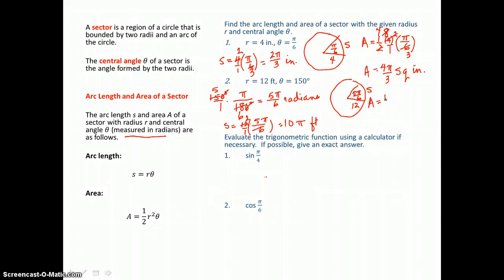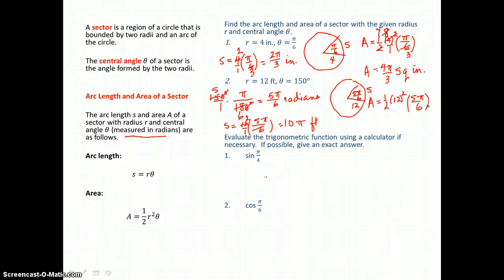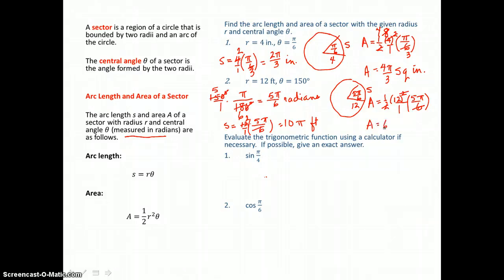Now we want the area of that sector, so substituting in: one-half times 12 squared times 5π/6. In the denominator we have 2 times 6, which is 12, so we can cancel one factor of 12 from the numerator. We're left with 5 times 12, which is 60, giving 60π square feet for the area of this sector.